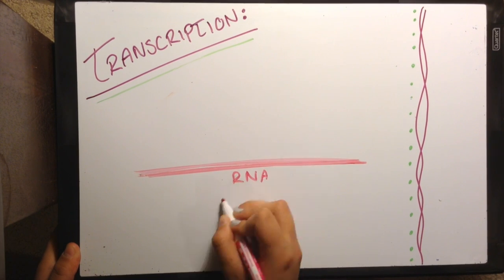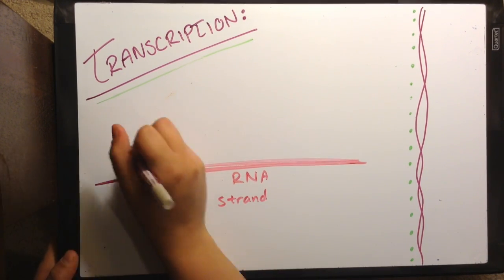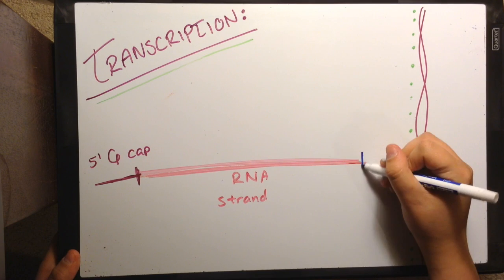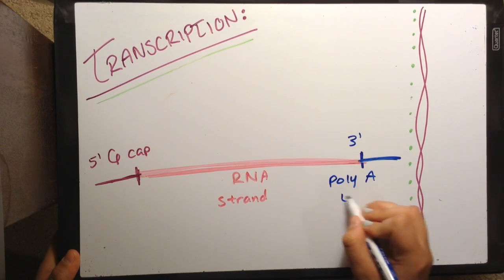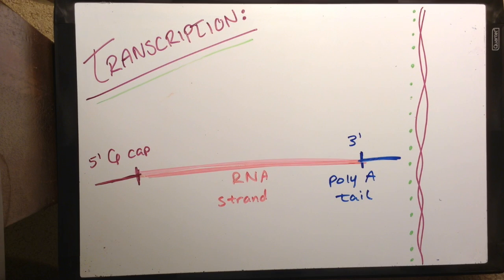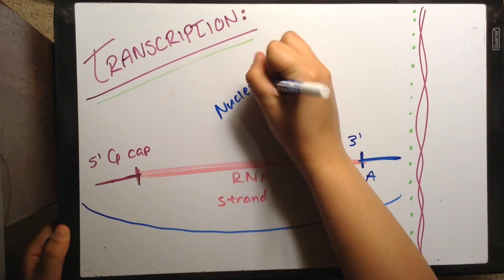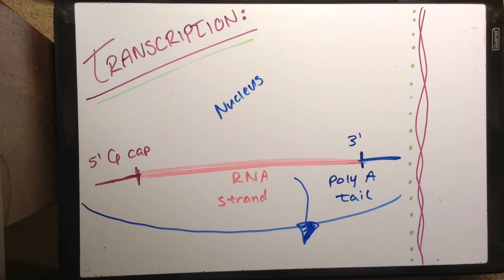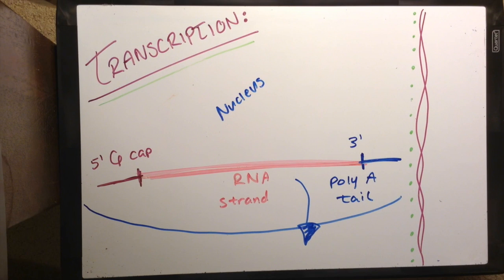What is left after this process is an RNA single strand with a 5 prime guanine cap and a 3 prime poly A tail. These extra nucleotides make it easier for the mRNA to leave the nucleus and help protect it from other enzymes that are present. But before leaving the nucleus, the RNA has to get rid of the extra information that has nothing to do with making a protein.